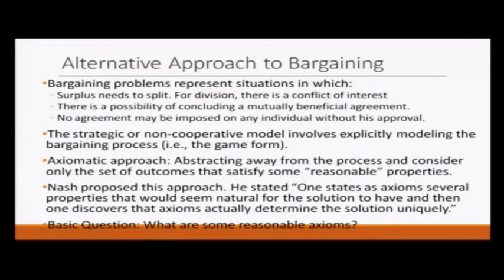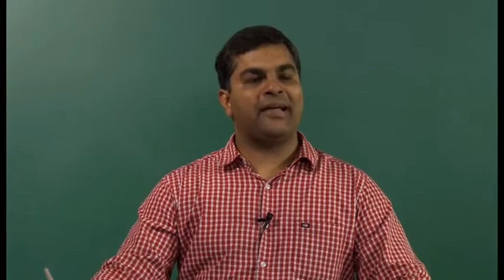A bargaining problem represents a situation in which we have to pay attention to three things. First, a surplus needs to be split. For division there is a conflict of interest — giving more to one person automatically means giving less to the other. In the canonical buyer-seller example, the buyer is willing to pay as much as V and the seller is willing to get at least C, so V minus C needs to be split. Any price determined between V and C would benefit both of them.